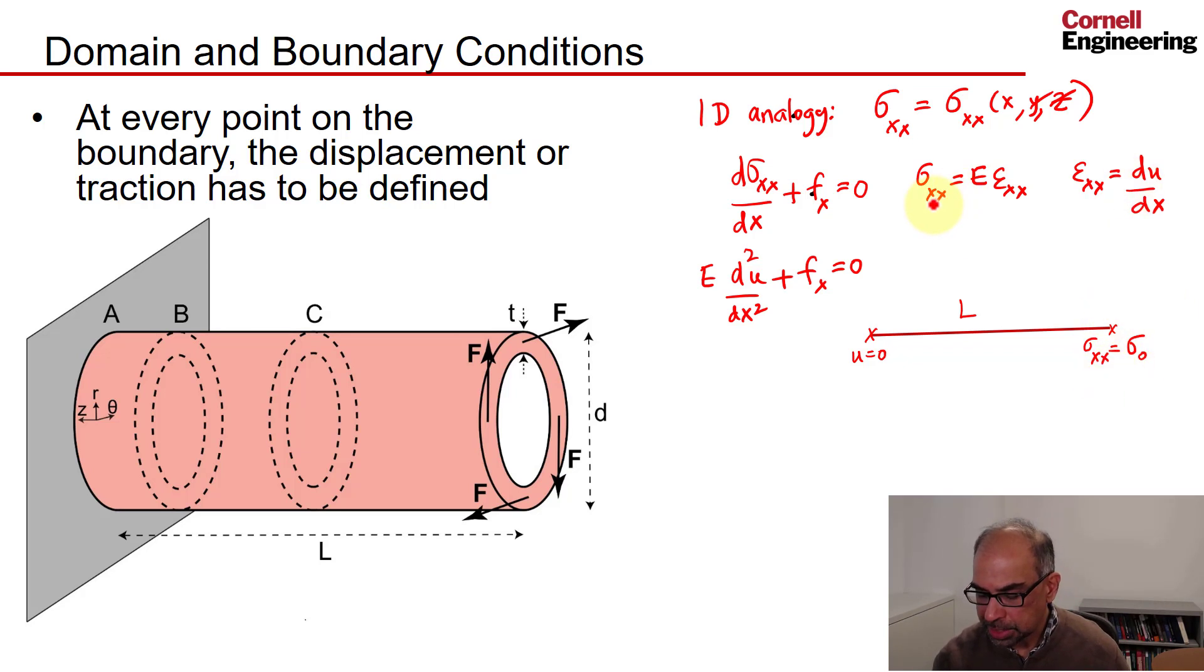Now sigma xx can be related to the strain, which in turn can be related to the displacement gradient. If I do that, if I use these two relations, I will get E du dx is equal to sigma naught.